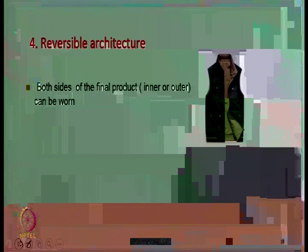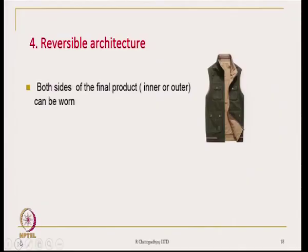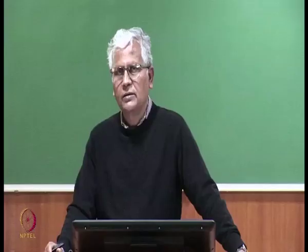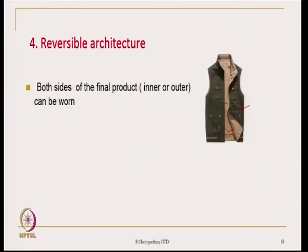Another interesting architecture is reversible. Many of us use garments which are reversible in nature — both the inner side and outer side of the garment can be used by the user. For such a garment, the outer and the inner side have two different colours. A person can use the same jacket with two different colours — one day the dark green side, the next day the reverse side. Generally, it gives the feeling of having two jackets when you actually have one. This is a kind of reversible type of design.